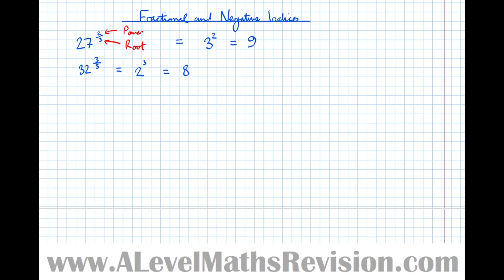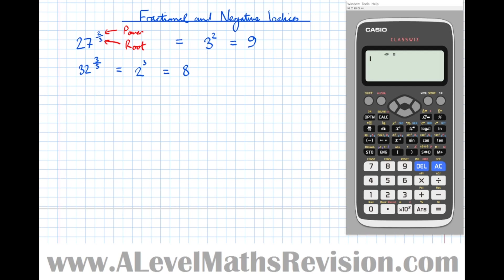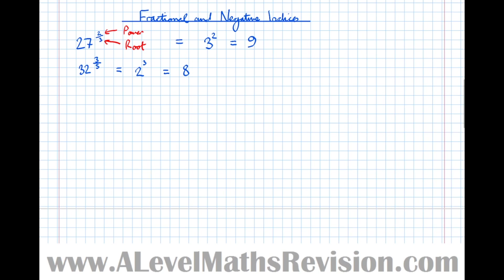We can check that on the calculator. While the calculator's on screen — the Casio ClassWiz — I really think you should buy one if you're a Year 11 student wanting to do A-level maths. They're about £20 on Amazon and are the recommended calculator for A-level maths; there are functions on it you will need later. Checking our answer: type 32 to the power of three-fifths using the fraction button, and the answer is 8. So the key point for fractional indices: the bottom's the root, the top's the power.